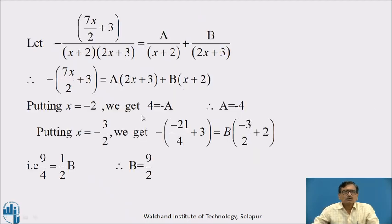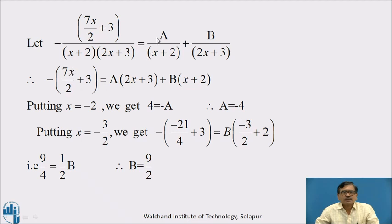Now we can go for partial fractions. Let minus(7x/2 plus 3) divided by (x plus 2)(2x plus 3) equal to A upon (x plus 2) plus B upon (2x plus 3). Multiplying both sides by (x plus 2)(2x plus 3), we get minus 7x/2 plus 3 equal to A(2x plus 3) plus B(x plus 2).